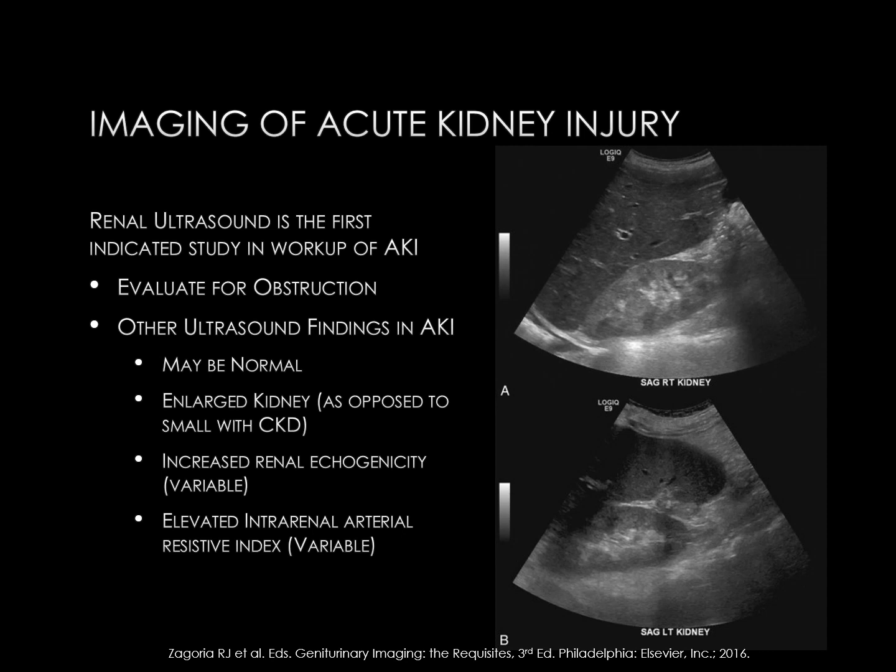Here are a couple of sample ultrasound images. In the upper image, you can see the right kidney sitting next to the liver. Normally the kidney should be isoechoic or hypoechoic relative to the liver, but this kidney is hyperechoic or too bright, and the left kidney similarly is hyperechoic. So this is an abnormal renal ultrasound in someone with AKI.